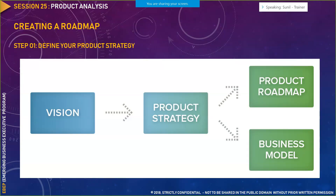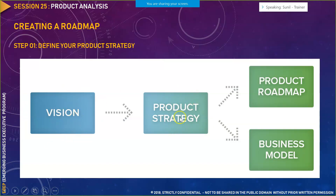There are certain steps to create a product roadmap. The first step is to define your product strategy — what business model your product would have, what problem it would solve, and what strategy you would adopt to succeed. You start with a particular vision and deliver a product roadmap based on that strategy.